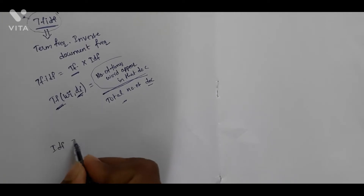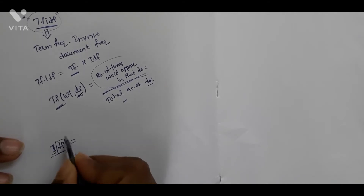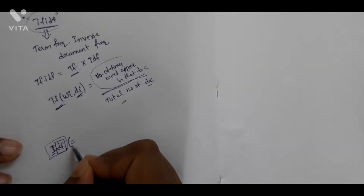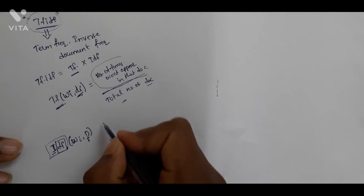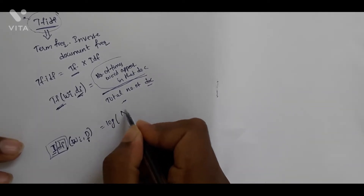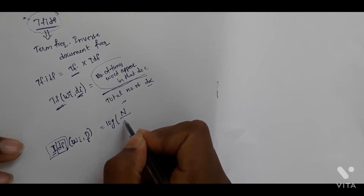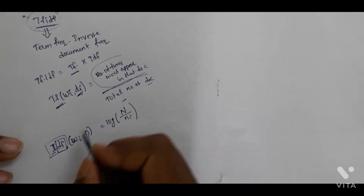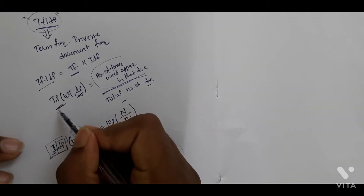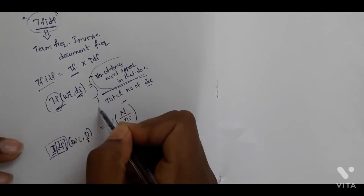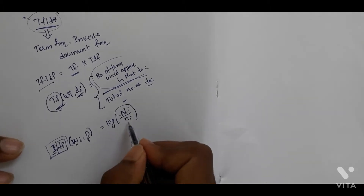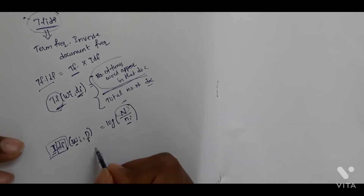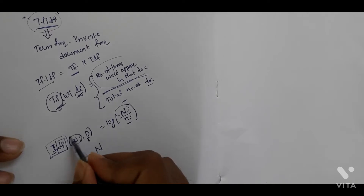Inverse document frequency — inverse means reciprocal, so we take the document frequency and compute its inverse. IDF of word w in corpus D equals the logarithm of the total number of documents divided by the number of documents in which that word appears.